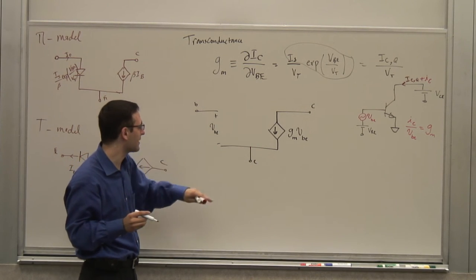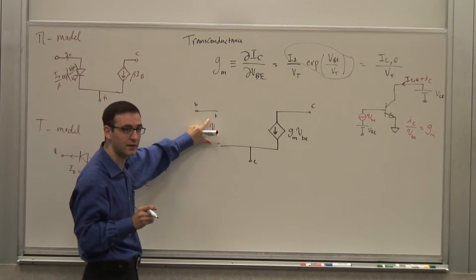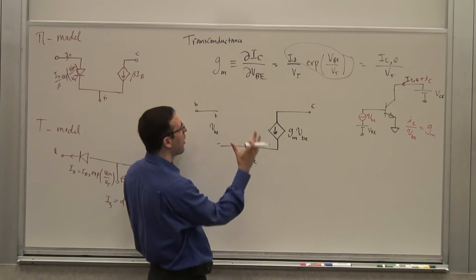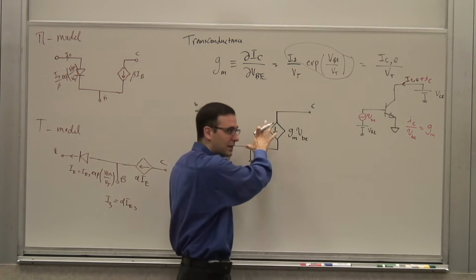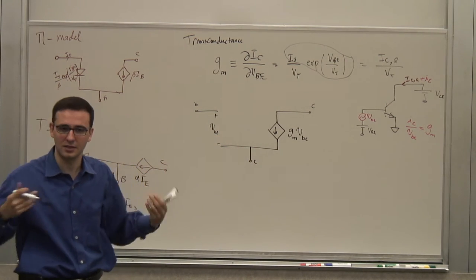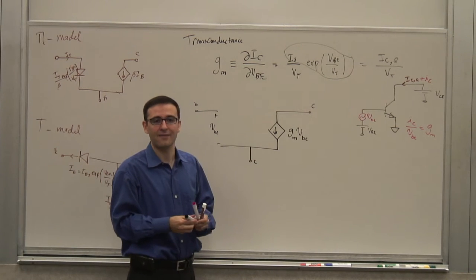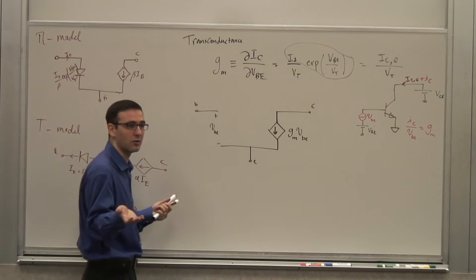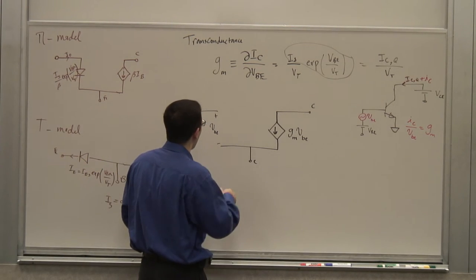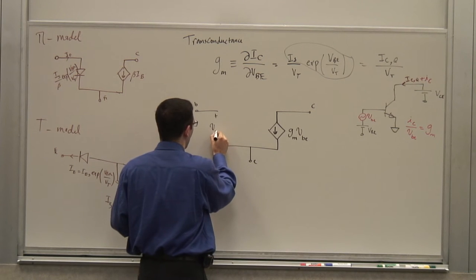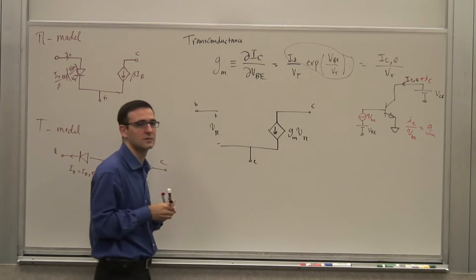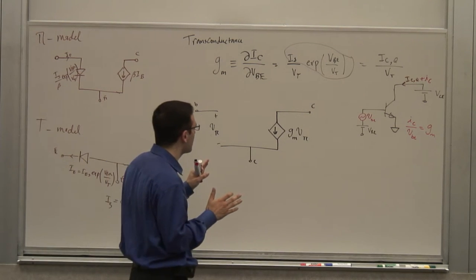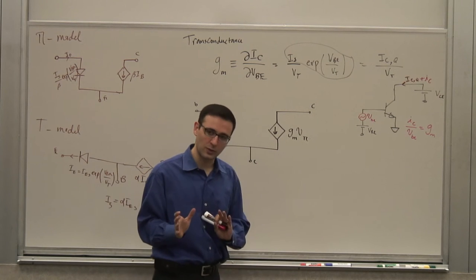In this model you've basically taken out the DC part — because this is a linearized model, and when you calculate derivatives to linearize, the DC parts disappear. Therefore in a small signal model, whenever you have a DC battery connected to a point, from a small signal perspective that's a short to ground. It's conventional to call this voltage Vpi instead of VBE, because this is the pi model.